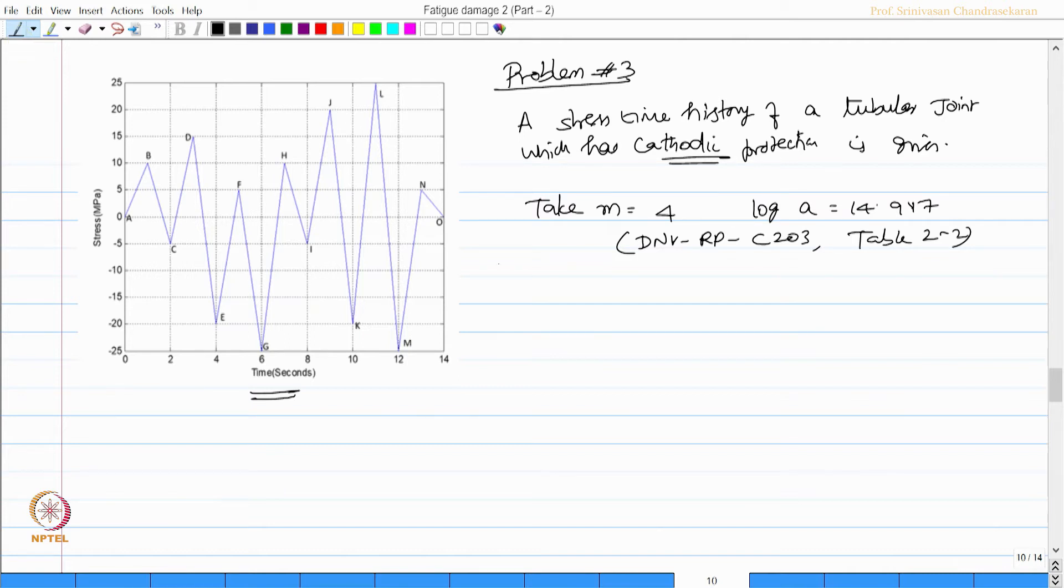I am going to enter here the path, the cycles, and the stress range. A-B varies from 0 to 10, so the stress range is 10, and cycle is A-B which is 0.5 because this is actually 1.